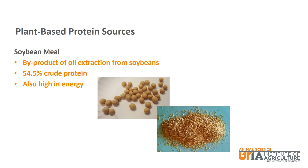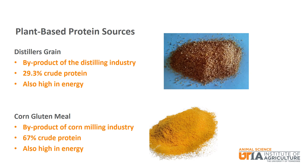Next, we have three plant-based protein sources. Soybean meal is a byproduct of the oil extraction from soybeans and is a common protein source in finishing pig diets. Soybean meal has just over 54% crude protein on a dry matter basis and is also high in energy. Distiller's grain is a byproduct of the distilling industry and is considered a protein supplement with just over 29% crude protein as well as being high in energy. Corn gluten meal is a byproduct of the corn milling industry with 67% crude protein and is also high in energy.